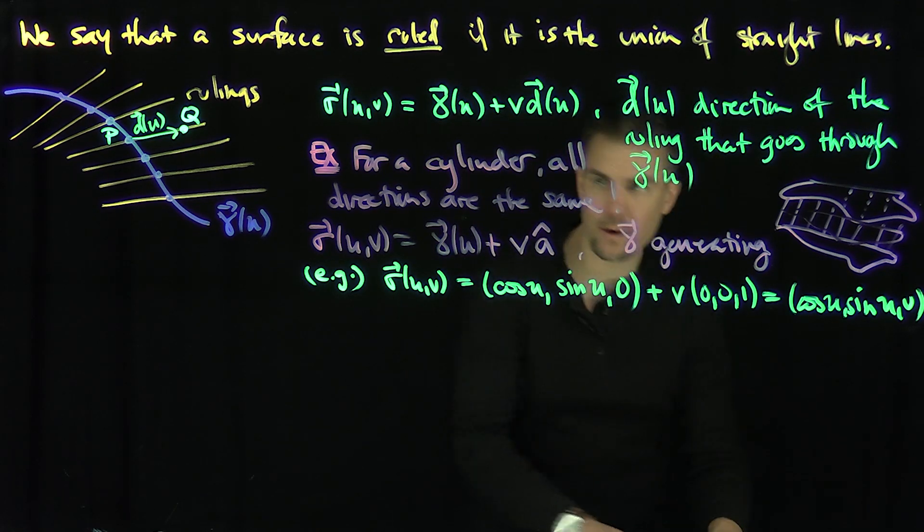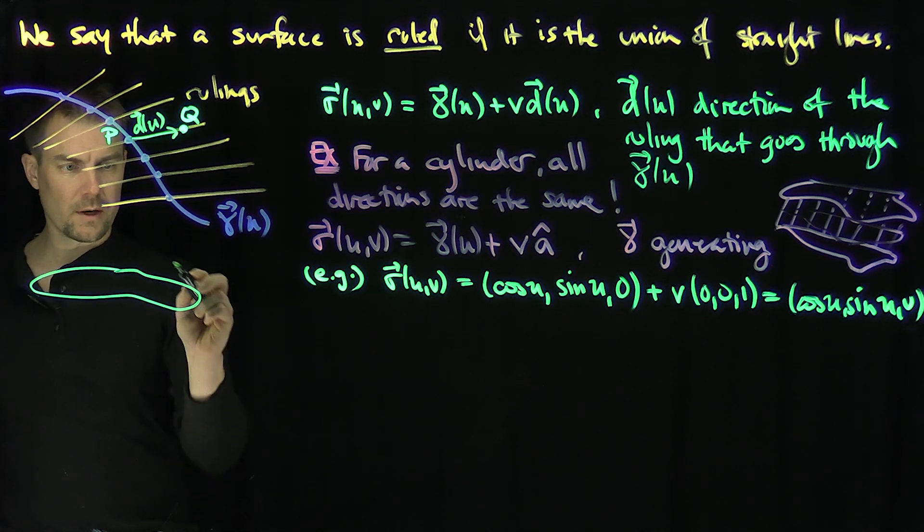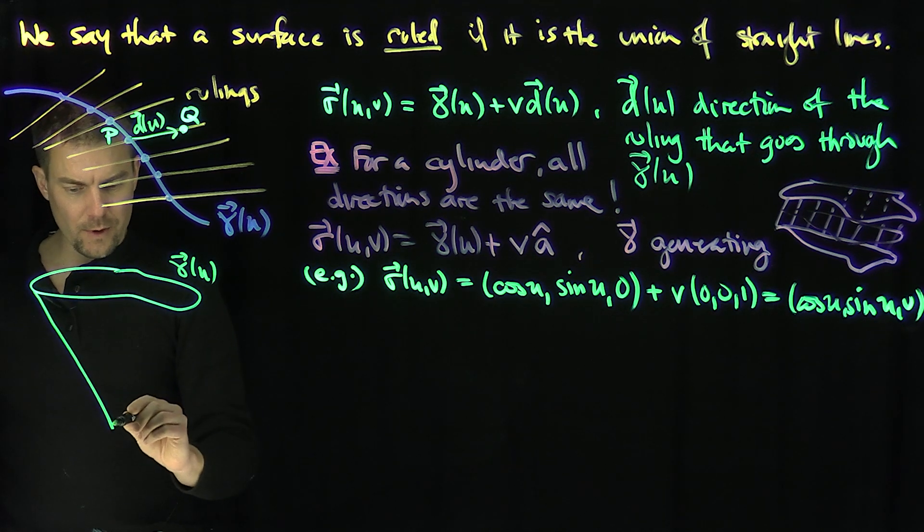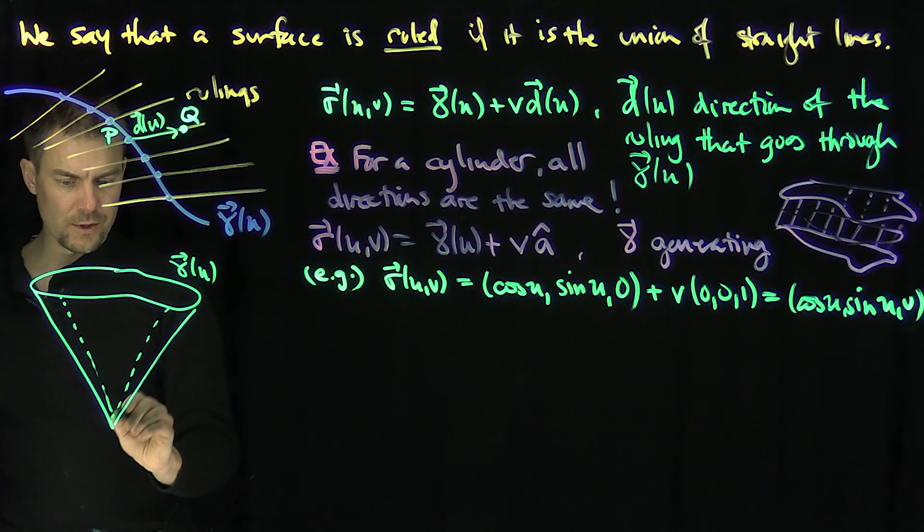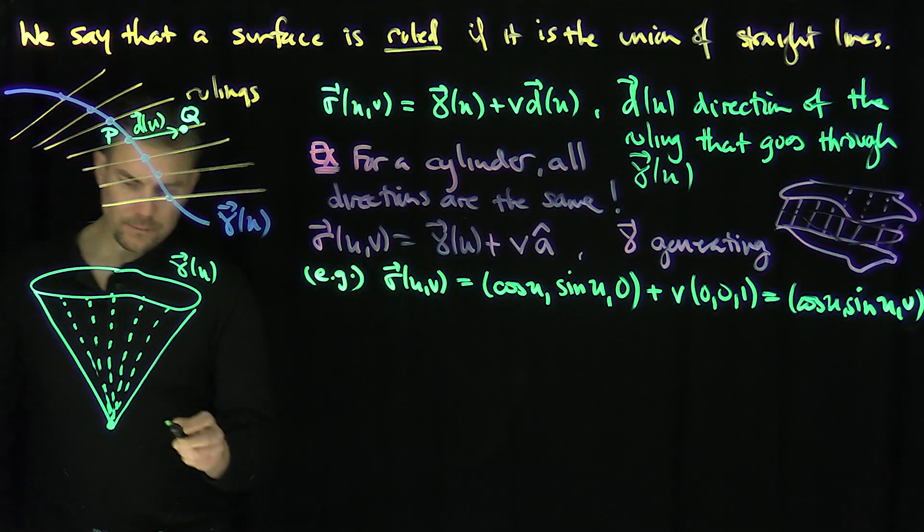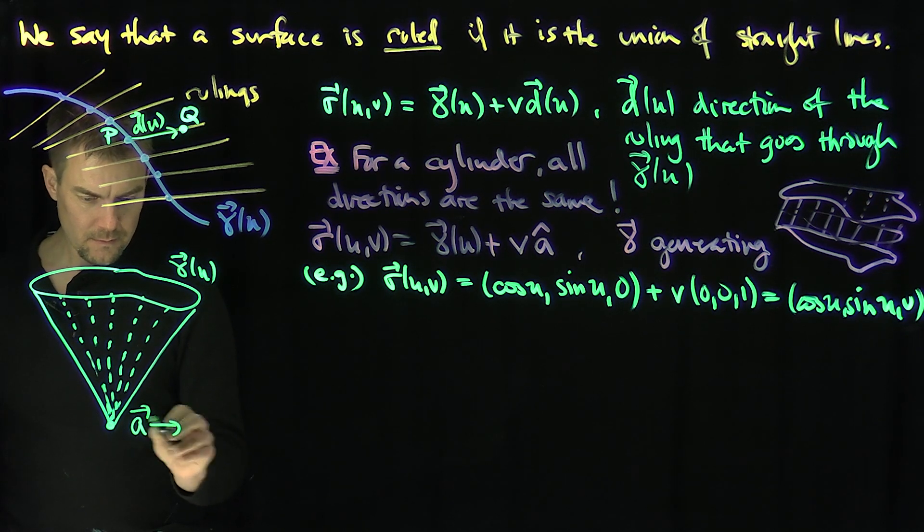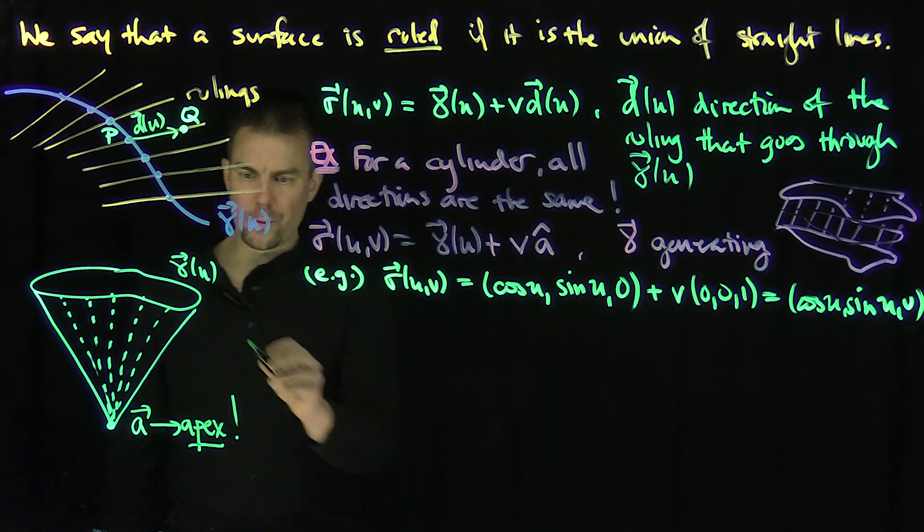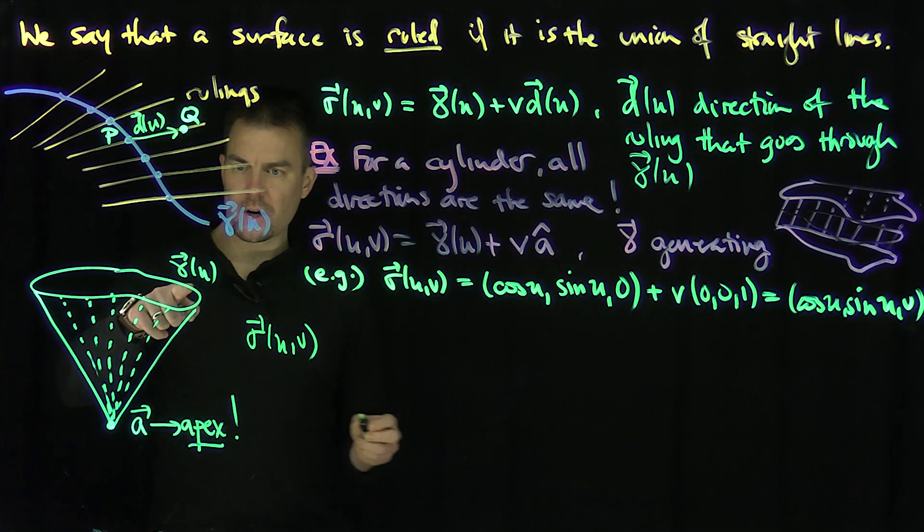We can also have cones, and what characterizes cones is there's some curve, let's call that gamma of u. And cones are characterized as going through an apex. So there's a whole bunch of straight lines, and all these straight lines go through an apex, like that. Let's call that vector apex a. And so for this general cone, what are we going to get? We're going to get sigma of u and v is going to be, well, I start on this curve gamma, so I'm going to start on the curve gamma of u.